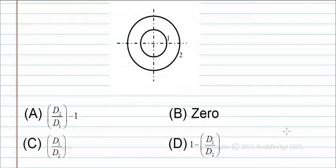The figure is given here. Option a: d2 by d1 minus 1. Option b: 0. Option c: d1 by d2. Option d: 1 minus d1 by d2.